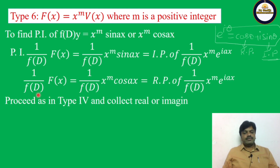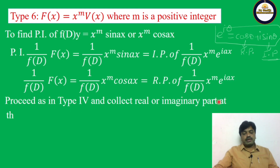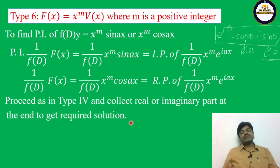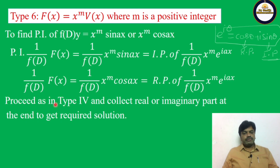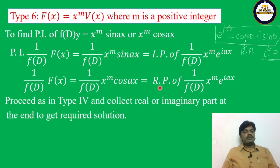Now proceed as in Type 4 — it is like e^(iax) · v, which is Type 4. Collect the real and imaginary parts and at the end we get the required solution. Finally, if it is the imaginary part, write only the imaginary part; if it is the real part, write only the real part. Then we get the required particular integral.